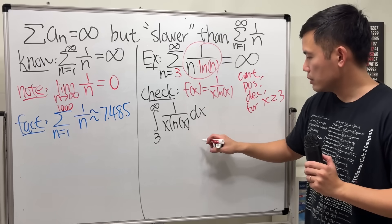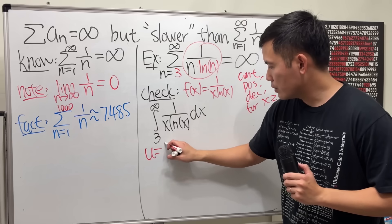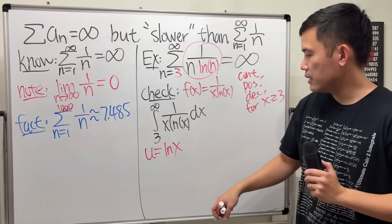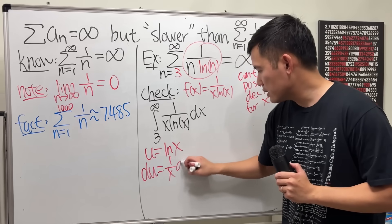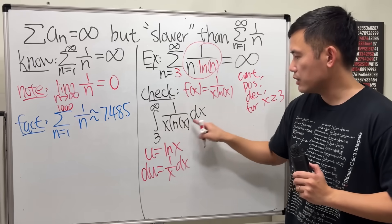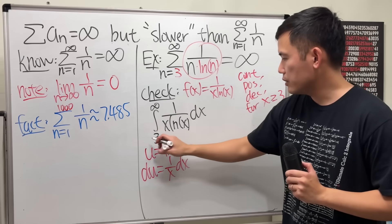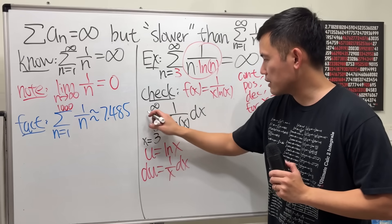to be equal to ln x and then just do the usual business. du is equal to 1 over x dx and that is exactly right here. So this right here, remember to change the x as well.